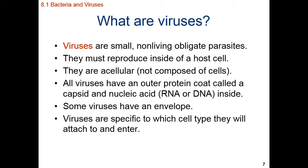A virus, unlike a bacterium, is even smaller, and it's non-living. It is not a cell. The smallest living thing is going to be a cell, by definition. And since viruses are smaller than cells, they don't possess all of the organelles needed to reproduce on their own. Viruses are considered non-living. They are a non-living obligate parasite. What do we mean by obligate? We mean that they have to exist as a parasite — they cannot exist on their own. They must reproduce inside of a host cell that they've reprogrammed.